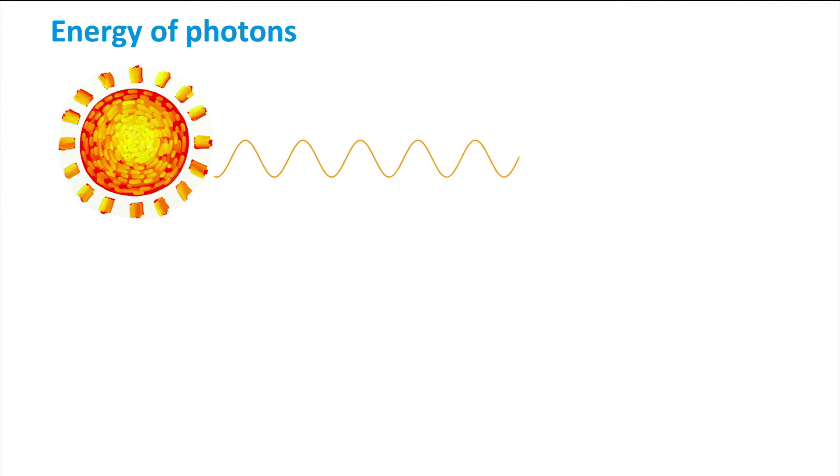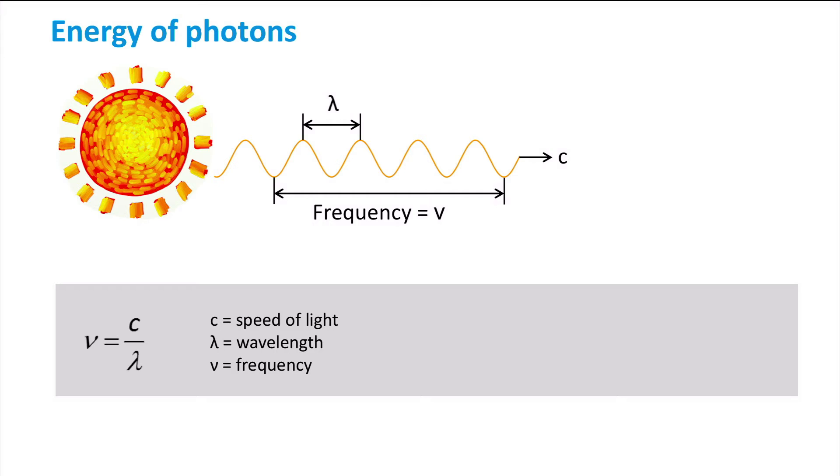As a wave, this radiation propagates at the speed of light and it is characterized by two parameters. The first is the wavelength, which we denote lambda. It is defined as the distance between two adjacent wave peaks. The second is the frequency, which we denote nu, representing the number of cycles per second. It is determined as the ratio between the speed of light and wavelength, and it is measured in Hertz.